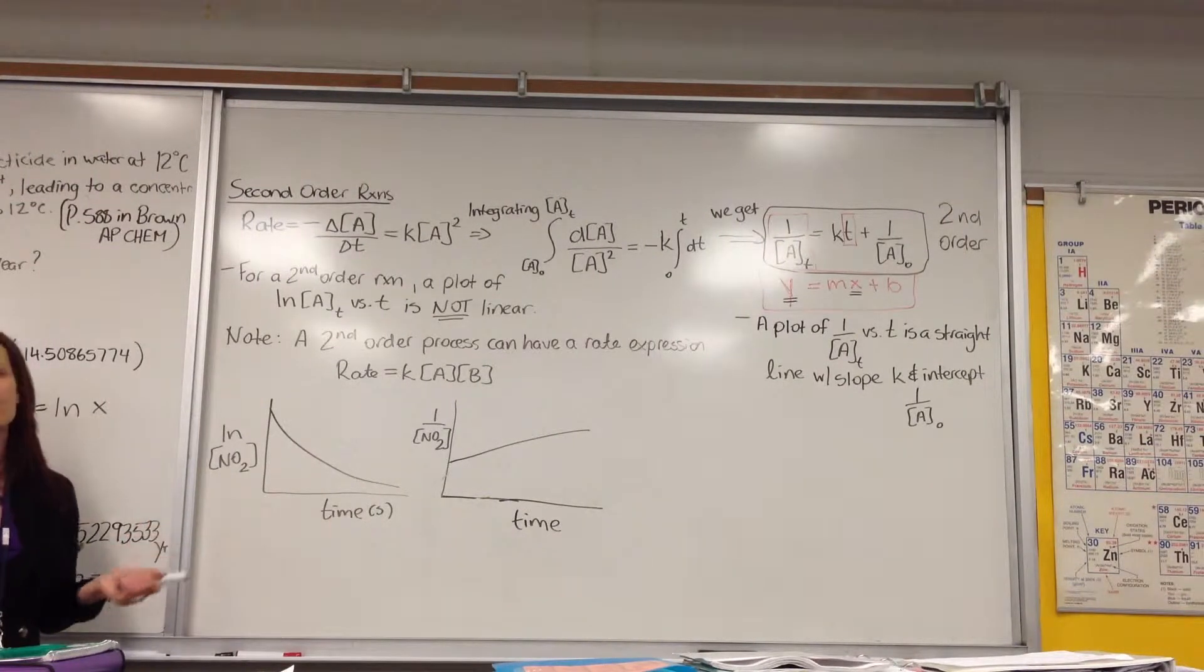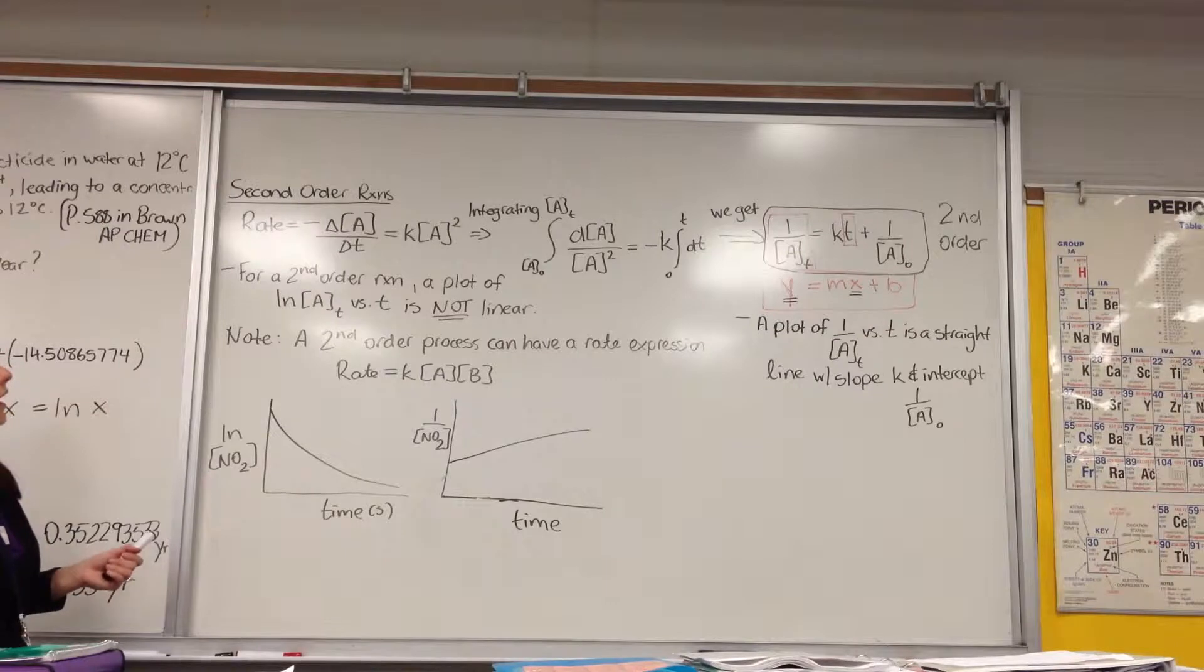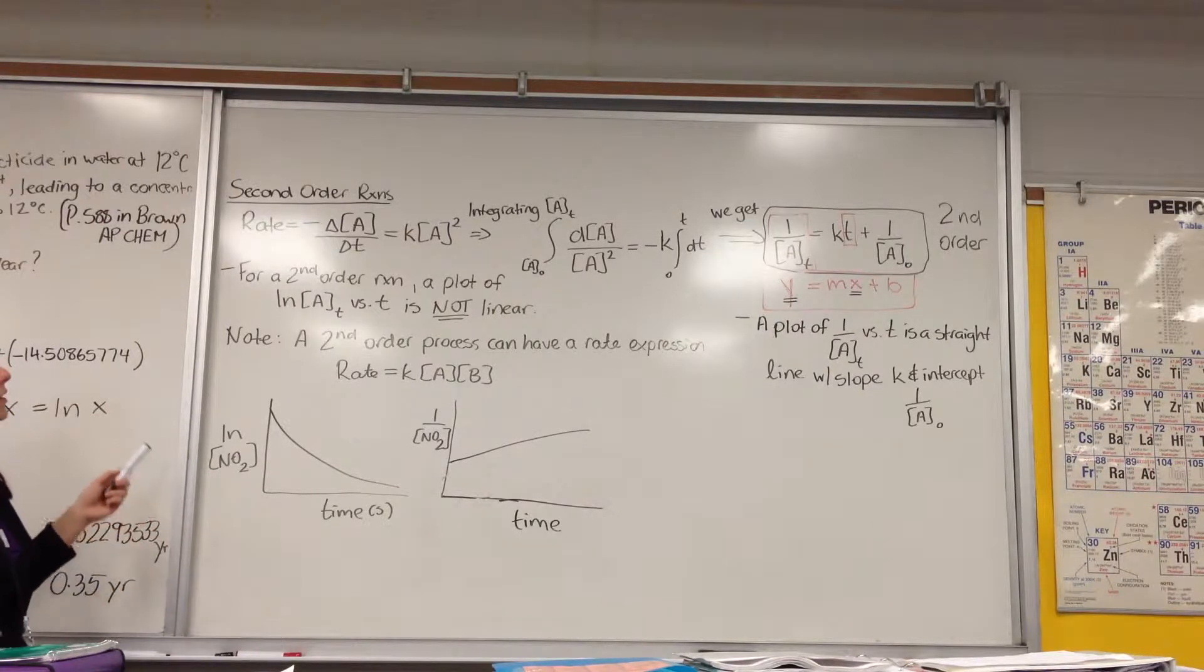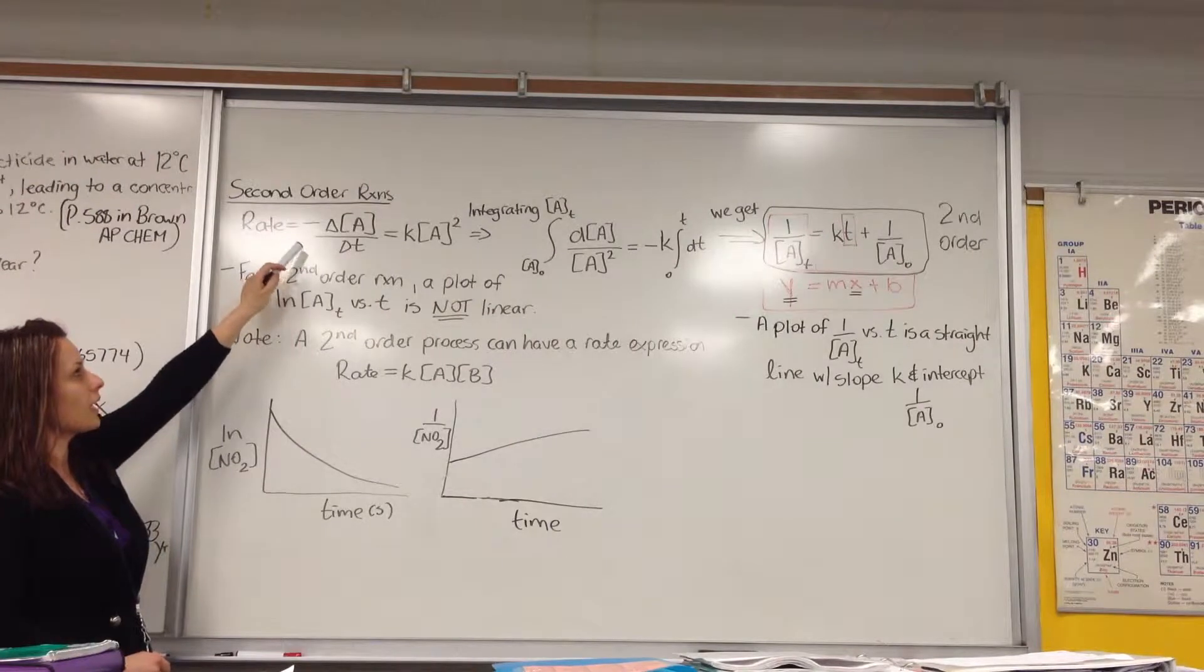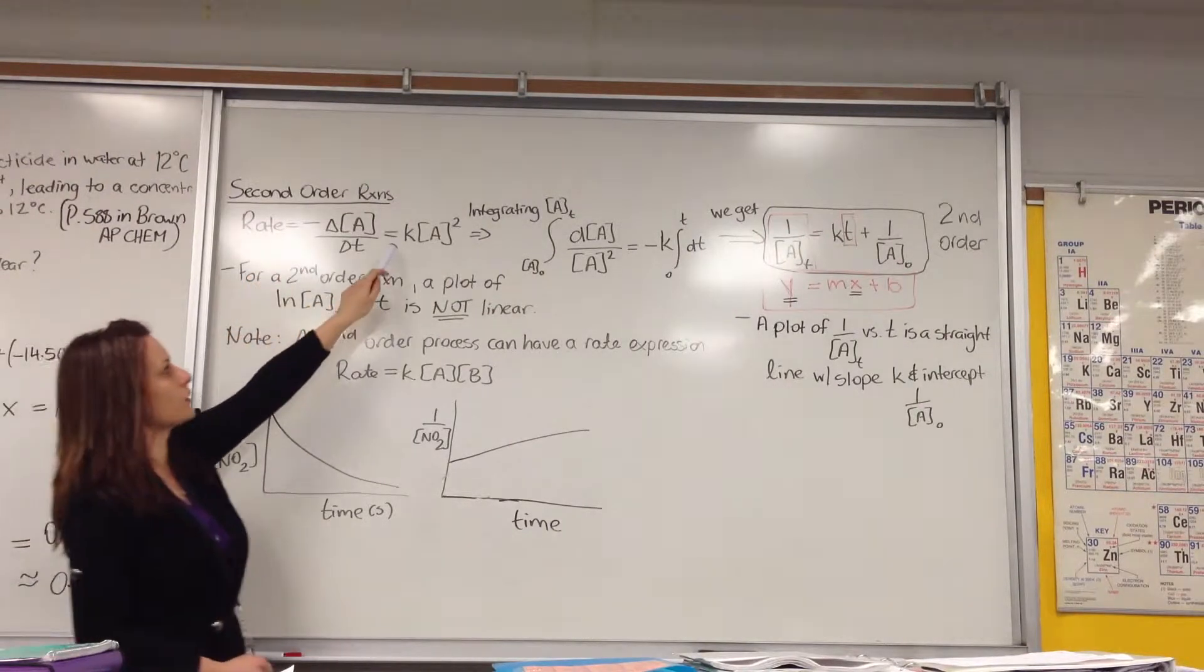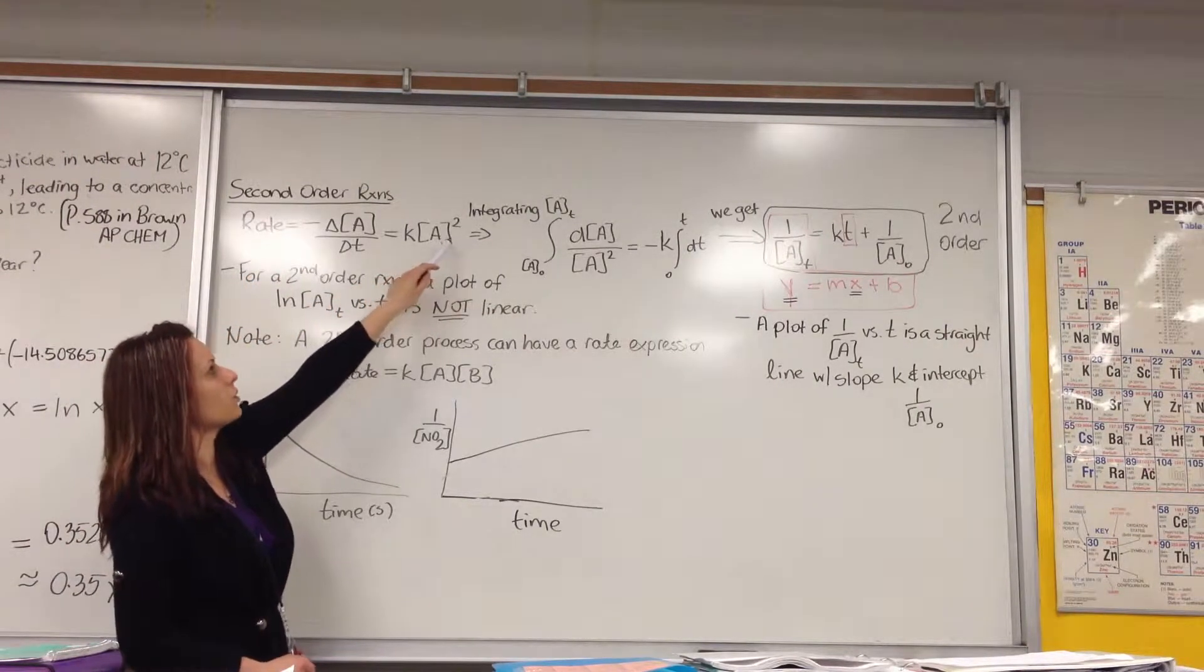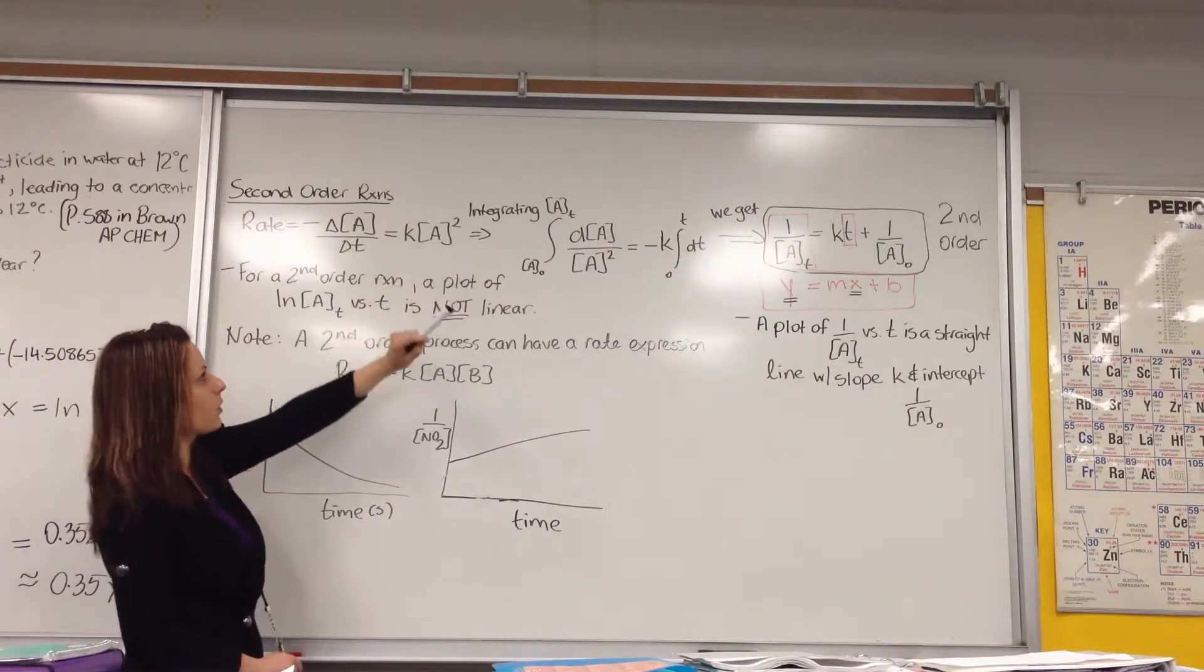Okay, so now we're going to have a look at second-order reactions. From what we know from our previous learnings, rate is equal to negative delta A over delta T, which is equal to kA squared. The two tells us that it is second-order.